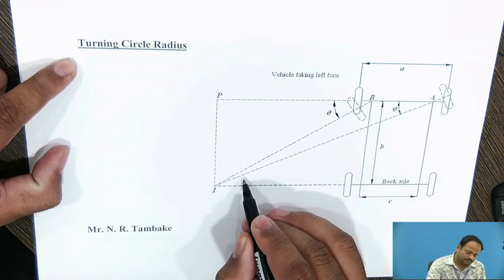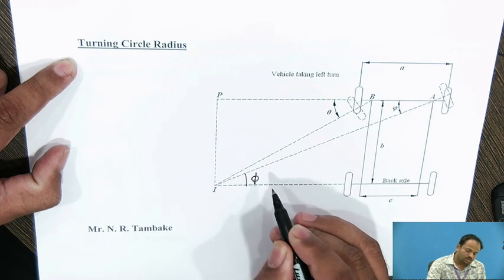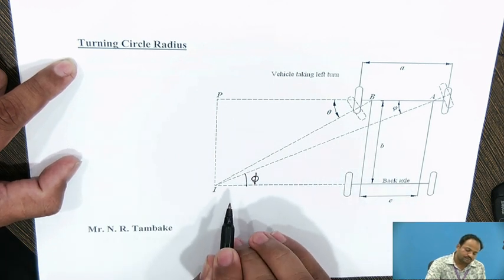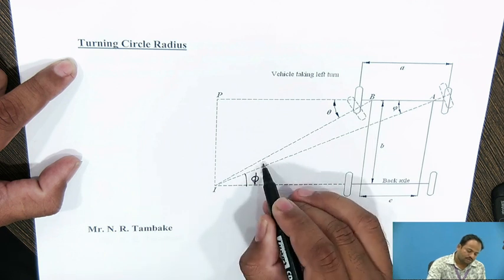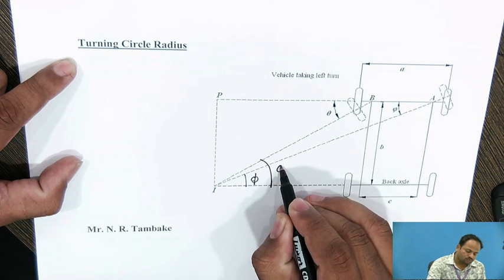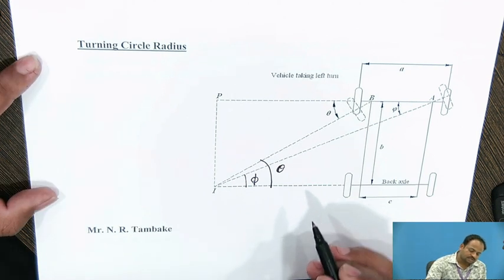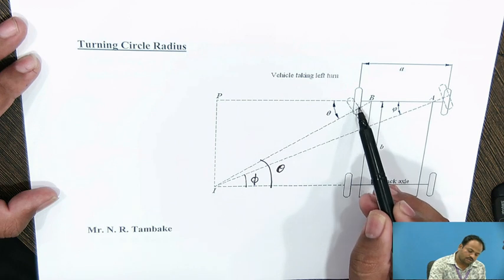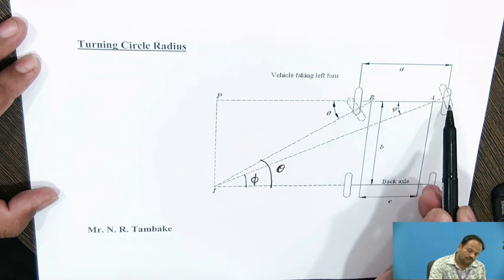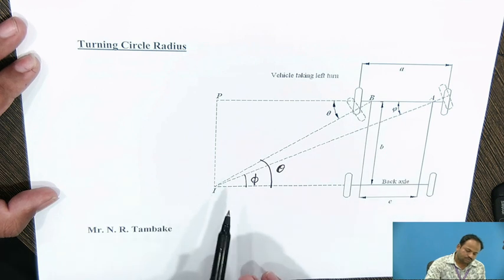Here you can see, this is the angle of the outer front wheel, phi, and this is the angle of the inner front wheel, that is theta. We will form formulas for the inner front wheel, outer front wheel, inner rear wheel, and outer rear wheel.